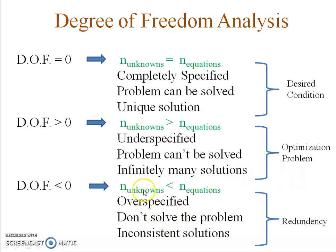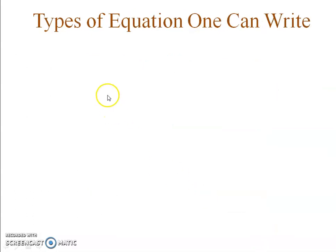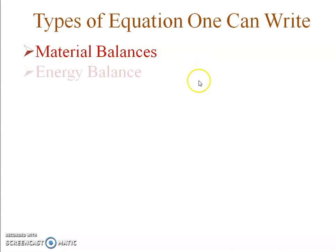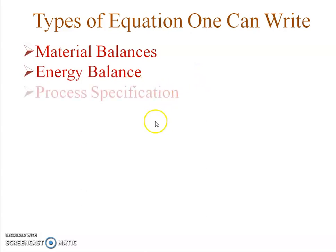It's easy to count unknowns, but sometimes you may forget some equations. Let's list the types of equations you can write. First, material balance equations — as many independent balances as you have components. Second, energy balance equations, which we will see later in the course. Third, process specifications — for example, stream B is one-fifth of stream A.